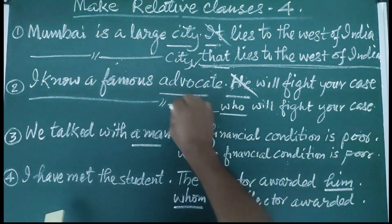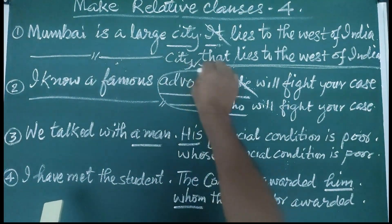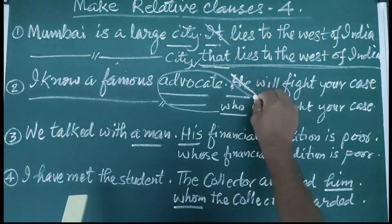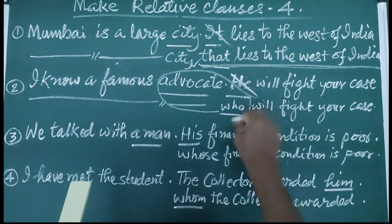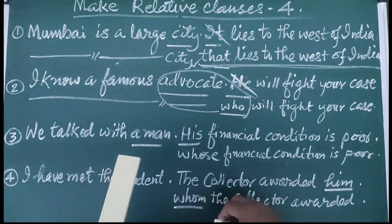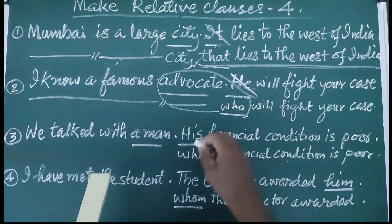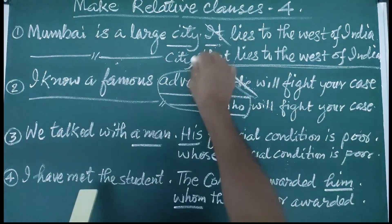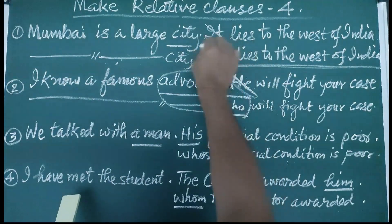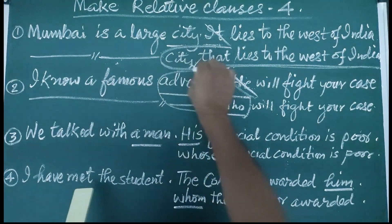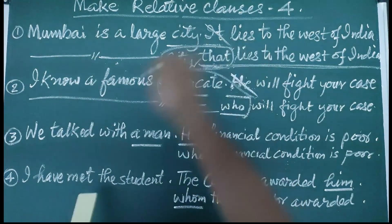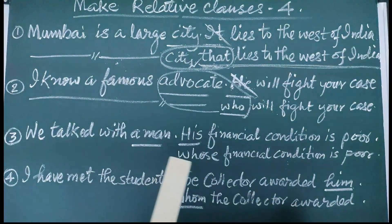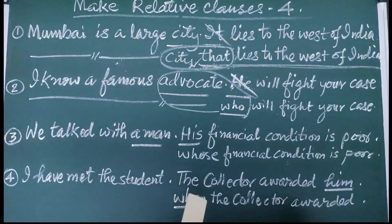In this condition, the two terms 'advocate' and 'who' go together. In the previous sentence, 'city' and 'that' go together. This is how relations are established.